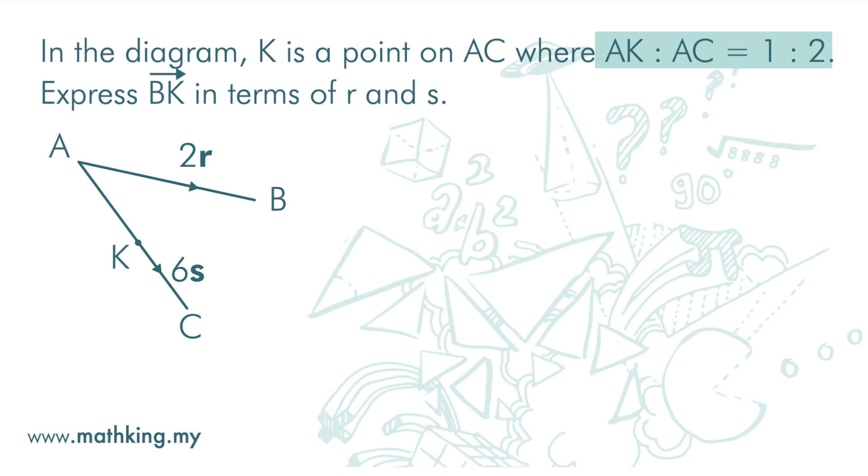Right, we are given AK to AC is 1 to 2. So AK is 1 and KC is 1, so that AK to AC is 1 to 2.